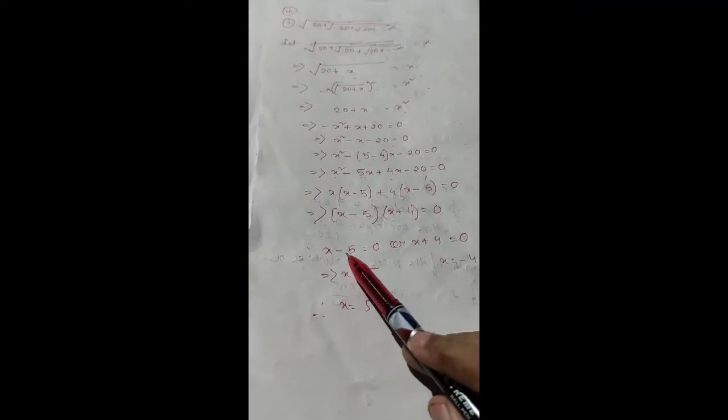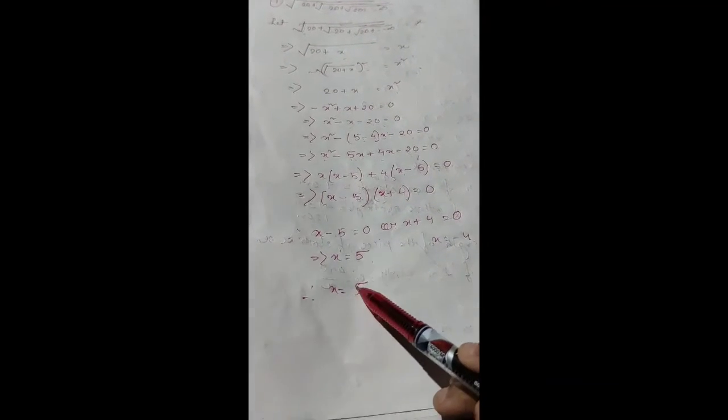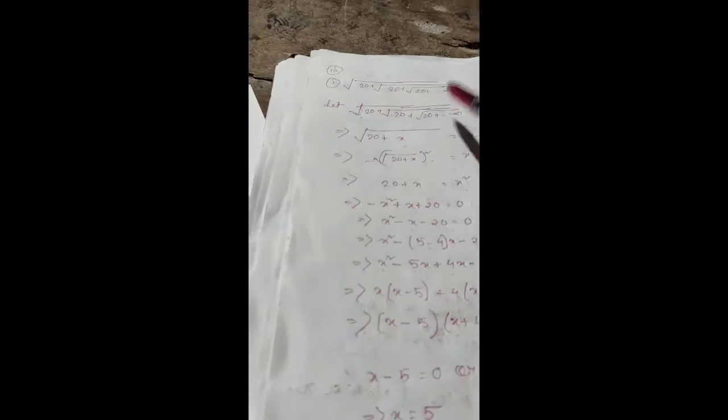So either (x-5) = 0 or (x+4) = 0. Either x = 5 or x = -4. But -4 is not acceptable because we are taking root, so we cannot consider negative value. We need positive value. So x = 5 is our answer.